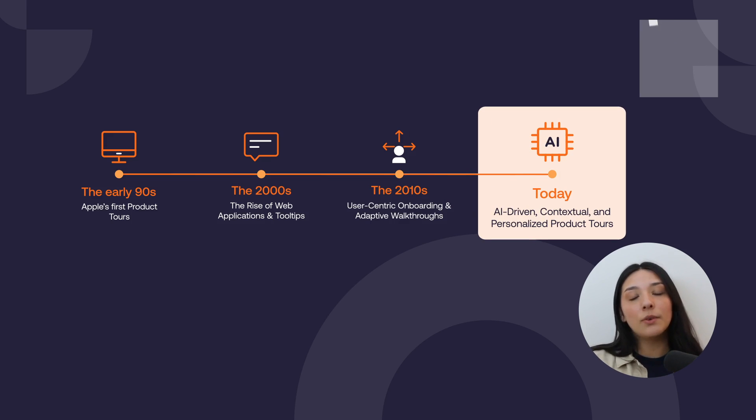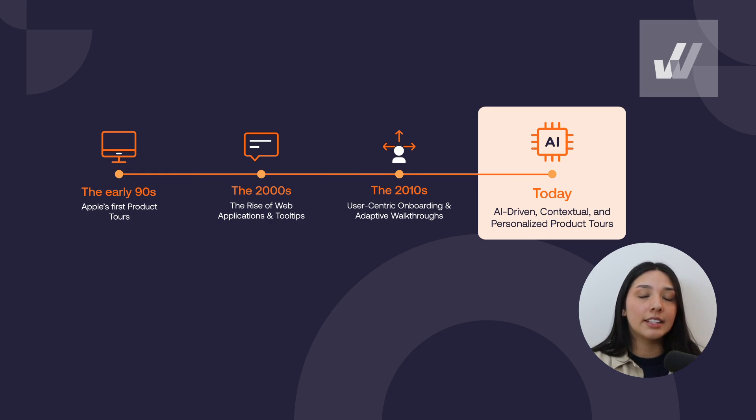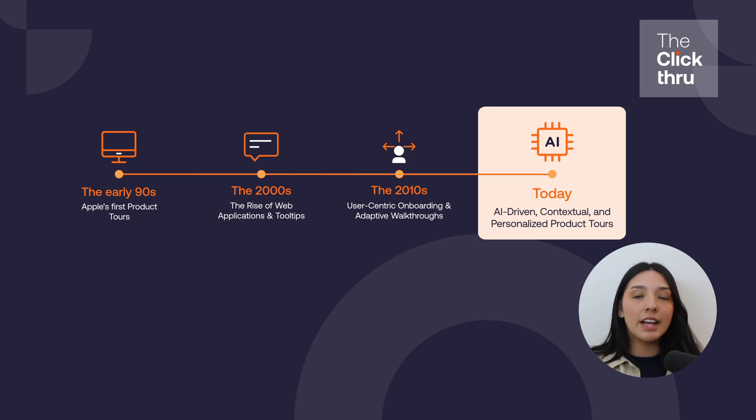Today, the best product tours are not just step-by-step guides — they're AI-powered, role-based, and contextual. Instead of forcing users through a rigid sequence, modern product tours dynamically adapt based on the user's role and goals, their past interactions with the product, and where they are in their customer journey. This shift from static to dynamic onboarding has made product tours more effective than ever, helping businesses drive faster adoption, higher engagement, and long-term user retention.